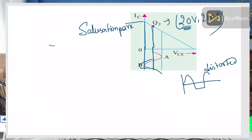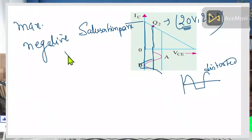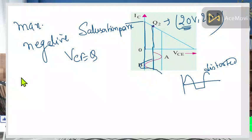If the Q-point is located near the saturation point, clipping starts at point B at the negative peak, because the transistor is going to saturation — it is conducting the maximum current and cannot change further. So the maximum negative swing is VCEQ, the value of VCE at Q. If this point is not at the correct position, you cannot fit the input AC in this region.